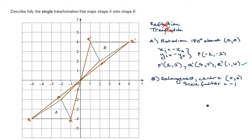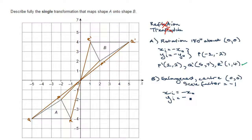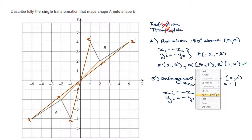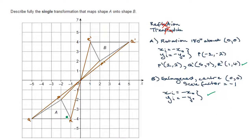Let's check the enlargement. The x-component of the image should be the scale factor — negative one — times the x-coordinate of the object. The y-coordinate of the image should be the scale factor, negative one, times the y-coordinate of the object — giving negative y of the object. In other words, as we've already proved, this must be correct. So here's an alternative solution for mapping shape A onto shape B.